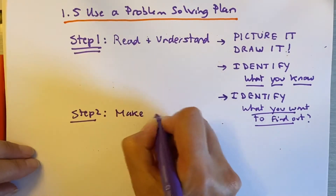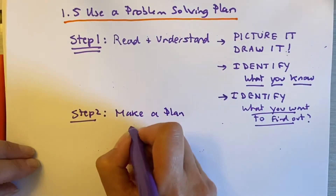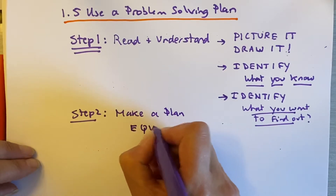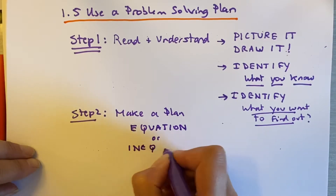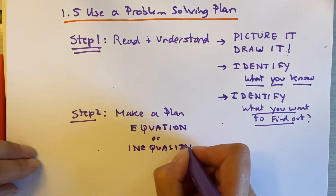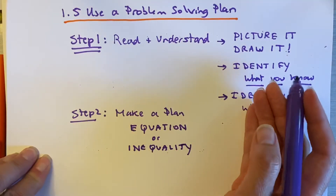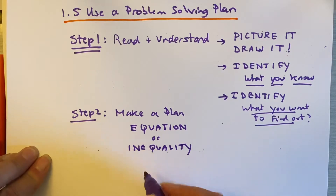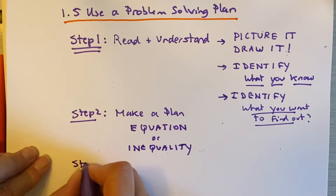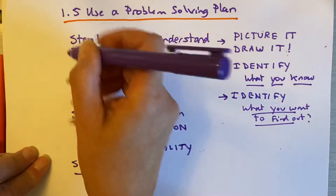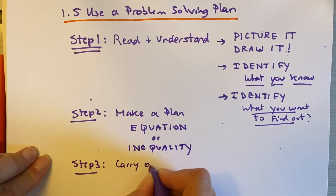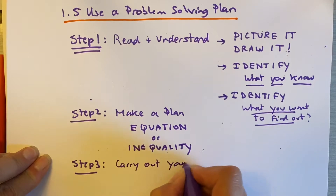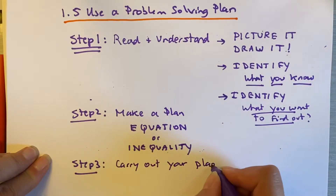Step two: once you've really understood the problem, take your time on step one, then make a plan. A plan basically comes down to an equation or an inequality that represents the reality of that paragraph — we've done that several times already. Step three, if you've gotten through steps one and two, goes very fast: carry out your plan. If you've made an equation, solve it. That's all that means.